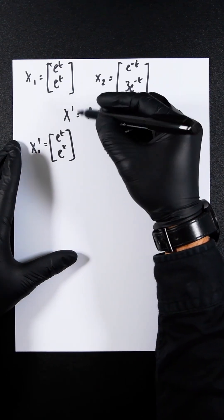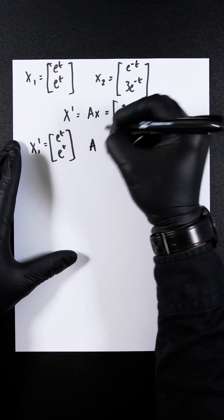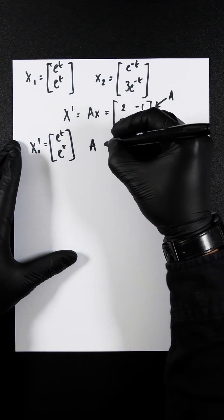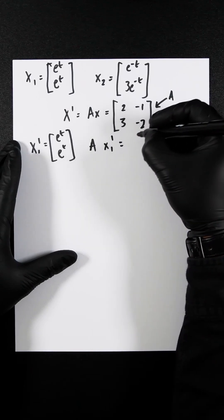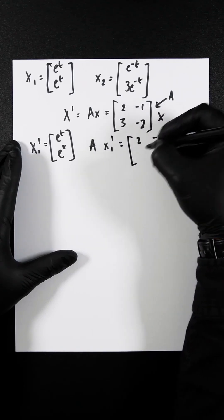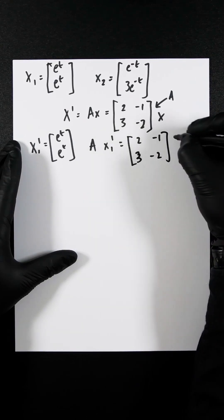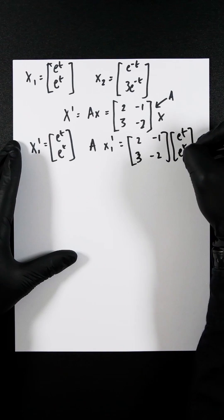And then we plug it in here. So it's going to be A, where this here is A, this matrix, X₁. So therefore, you're going to get 2 minus 1, 3, 2 and then e to the t, e to the t.